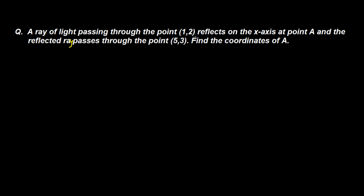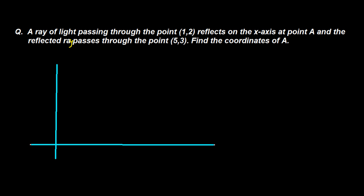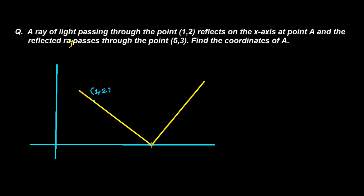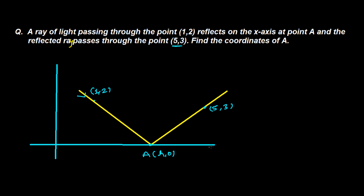Let's try to visualize the problem, then the question will be much easier. This is our y-axis and this is our x-axis. As the question says, a ray of light passes through the point (1, 2). The ray comes to the x-axis and gets reflected back, passing through the point (5, 3). The ray interacts at point A on the x-axis, whose coordinates we write as (h, 0), since it lies on the x-axis. The origin is (0, 0).